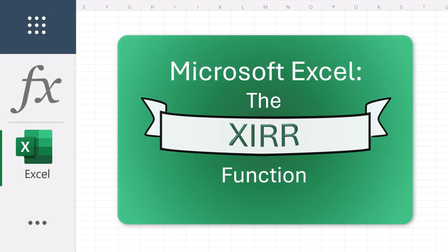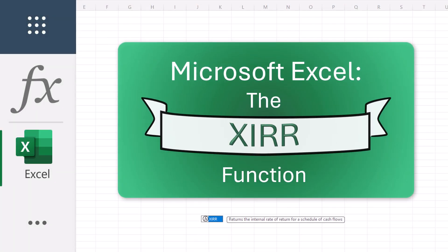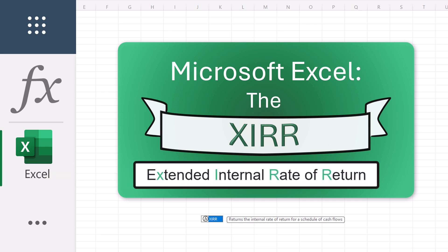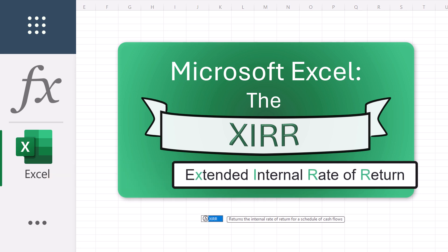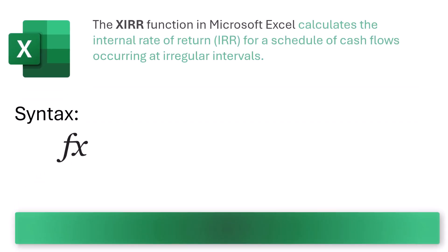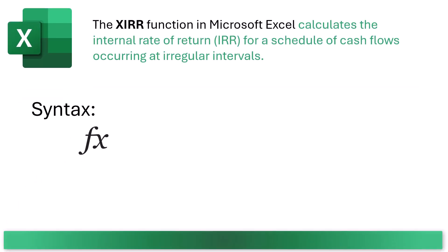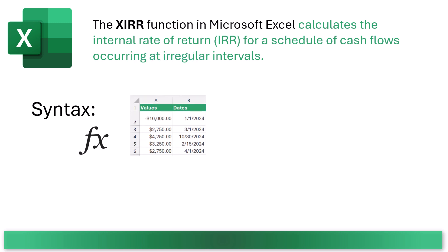The XIRR function in Microsoft Excel. XIRR is a powerful tool for financial analysis. XIRR stands for Extended Internal Rate of Return — a function in Excel that calculates the internal rate of return for a series of cash flows that may not be periodic, meaning a schedule of cash flows occurring at irregular intervals.